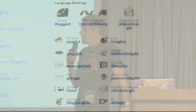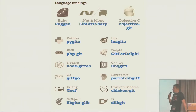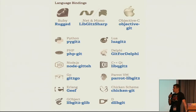We also have lots of bindings. Because it's written in C in such a way to make it easy for bindings to be written, we've got bindings for just about every language you can think of, including Go for you, Jack. The three on the top are probably the most mature bindings, the most complete.